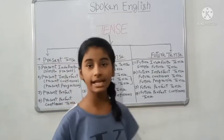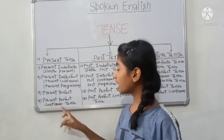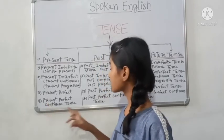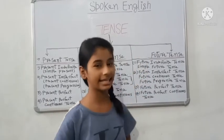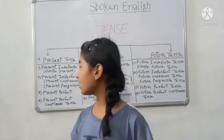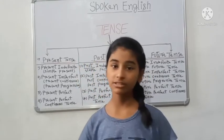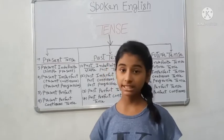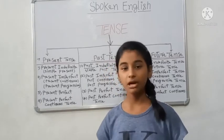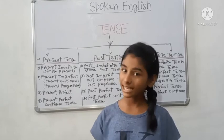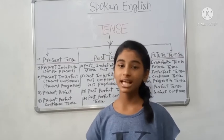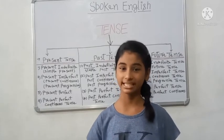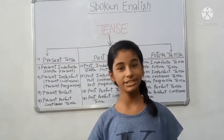For example: Past Perfect Continuous, Future Perfect Continuous, Present Perfect Continuous — the same structure, just past, present, and future change. We will know more details about how to make sentences and understand each tense properly. I will cover all of that in separate videos in good detail. Until then, if you like this video, please like, subscribe, and share. I hope you enjoyed today's new topic.